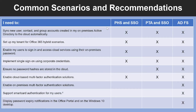Let us look at some of the common scenarios and recommendations. This table shows some of the common hybrid identity and access management solutions with recommendations as to which hybrid identity solution might be appropriate for you. If you are trying to sync a new user, contact, and group account created in an on-premises Active Directory, you can use Password Hash Synchronization, Pass-Through Authentication, or ADFS. Similarly, to set up an Office 365 hybrid scenario, you can use all three methods as well.